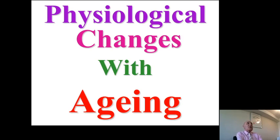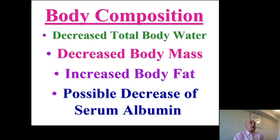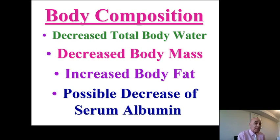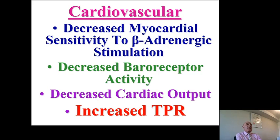Now let's talk about the physiological changes that develop with advancing age. Looking at body composition, there is a decrease in total body water in the elderly. There is also a decrease in body mass and an increase in body fat. There may also be a decrease in the level of serum albumin. When it comes to the cardiovascular system, changes begin to occur.